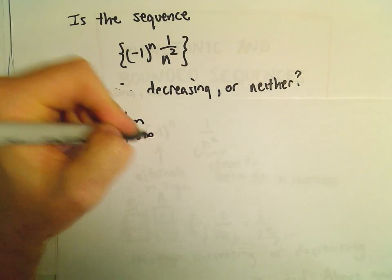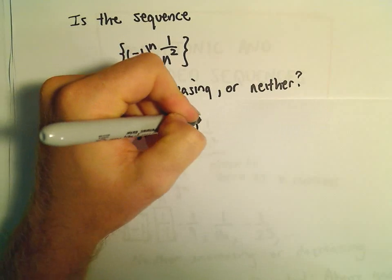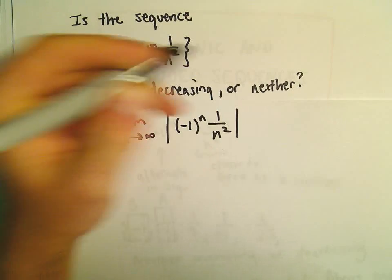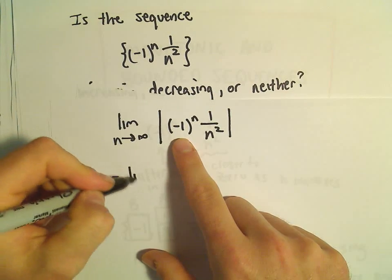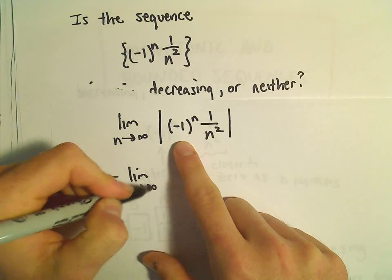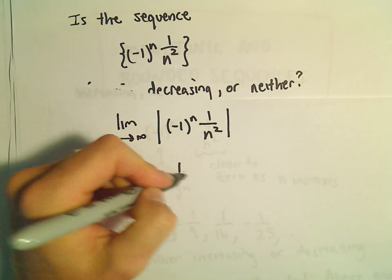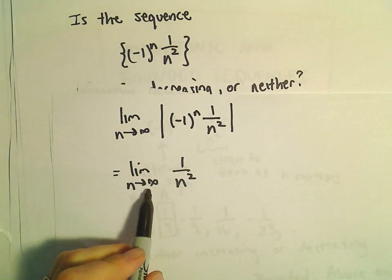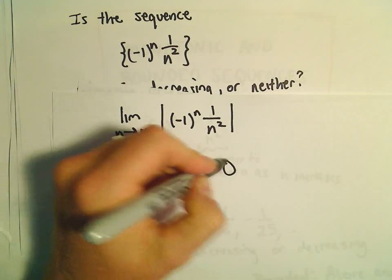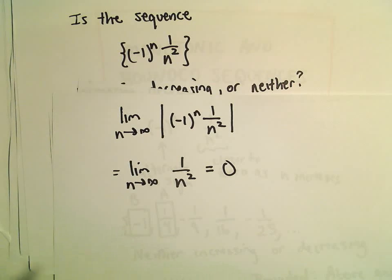Remember, the absolute value theorem, we just take the absolute value of the sequence. In that case, if we take the absolute value, the (-1)^n would go away. We would just be left with 1/n^2 if we simplify this. And certainly, as n goes to infinity, this limit equals 0.